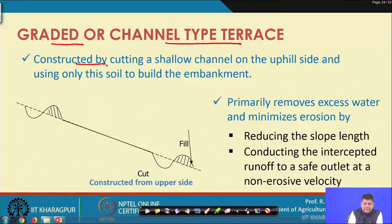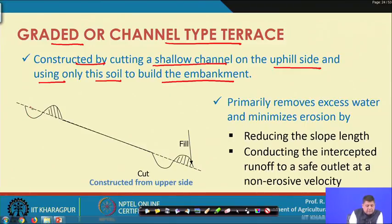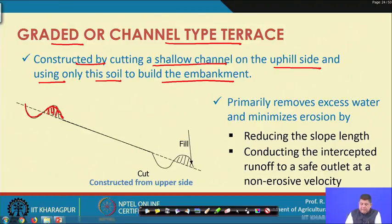Graded or channel type terraces are constructed by cutting a shallow channel on the uphill side and using only this soil to build the embankment. The cut and fill operation is the primary activity involved. As you can see, this is the cut portion and this is the fill portion used to build the embankment, which is basically the ridge.